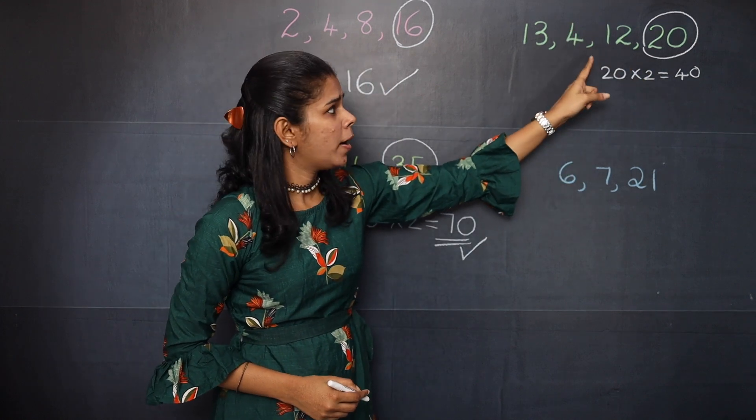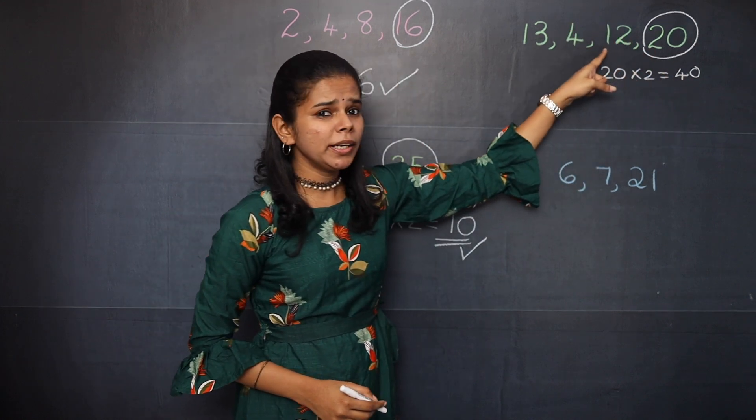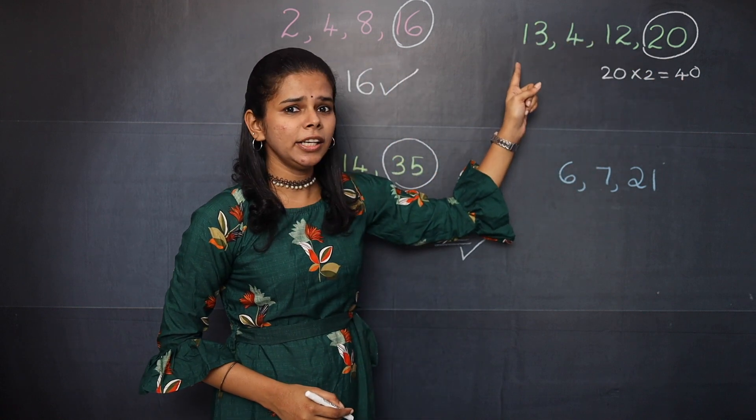40 is divisible by 4 but is 40 divisible by 12? No. Is 40 divisible by 13? No.